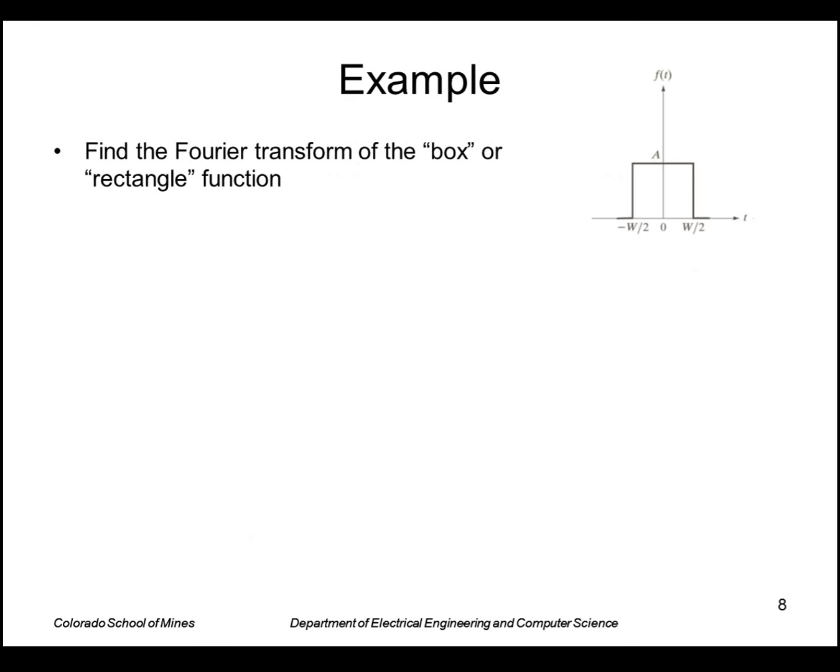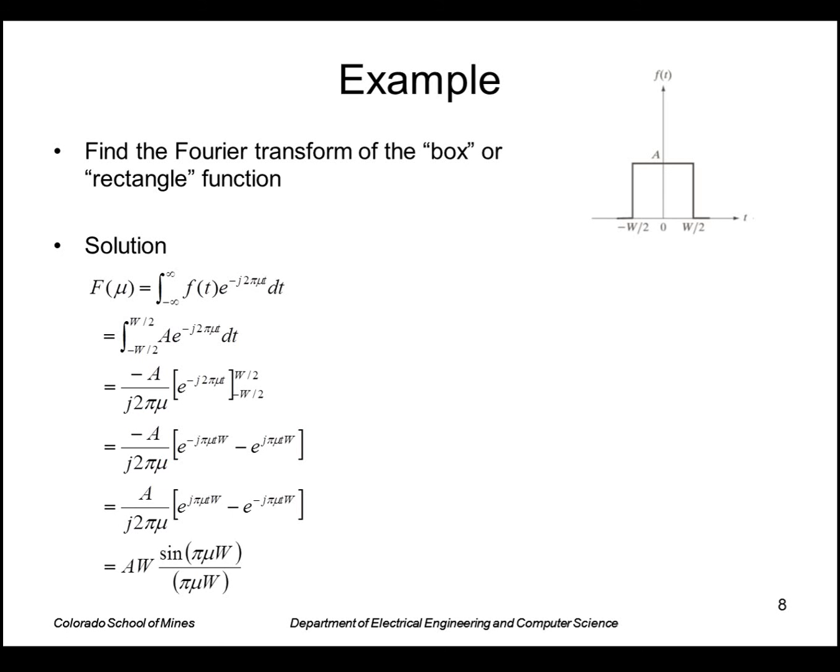Here's an example. Let's find the Fourier transform of this simple function called a box or rectangle. So this function is zero everywhere except between minus w over two and w over two. So we plug that into the definition of the Fourier transform, which is easy to integrate. The exponential is just the exponential. Plugging in the limits, we get this difference of exponentials, and that we can recognize is an identity for a sine, a sine of a quantity over the quantity like that.